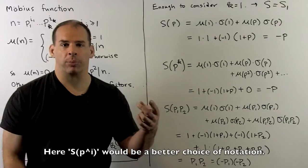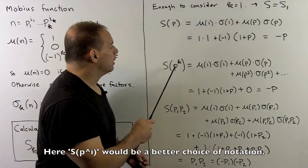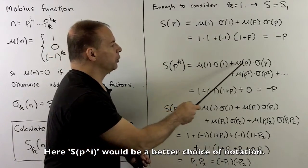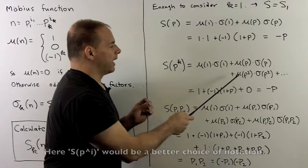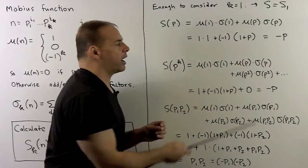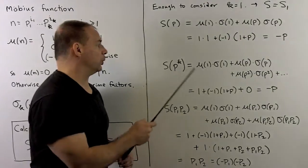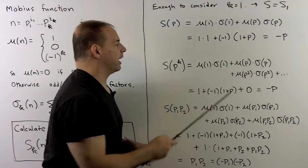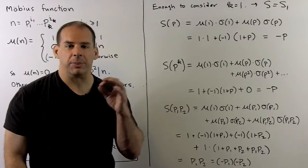If we take a power of a prime, same idea. I have mu 1 sigma 1, mu p sigma p. Then mu p squared sigma p squared, and so on until we get to mu of p to the k, sigma p to the k.